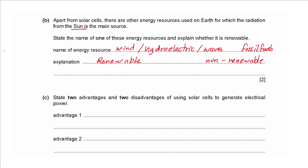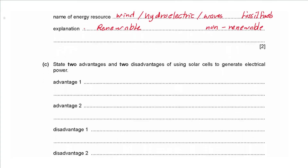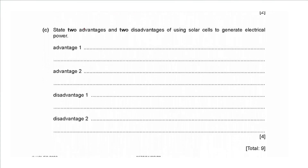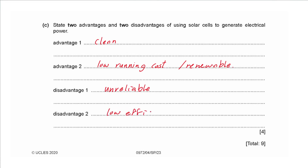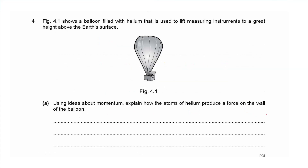Part c: state two advantages and two disadvantages of using solar cells. Advantages: solar cells are a clean, non-polluting source of energy, have low running costs, and are renewable. Disadvantages: they are unreliable — dependent on daytime, weather, and location — and they have low efficiency or low output compared to input, and they need a large amount of space.